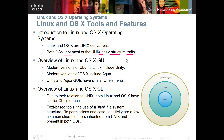Unlike Windows, they don't have drive letters like C and D — they're based on a folder-type structure. Modern versions of Ubuntu Linux include Unity, and modern versions of OS X include Aqua. Unity and Aqua GUIs are similar UI elements. There are multiple different graphical user interfaces you can get with Linux — hundreds of different GUIs — and you can even create your own GUI with the open operating system.